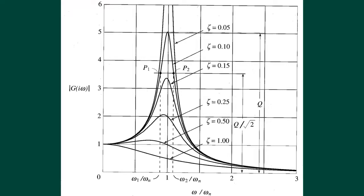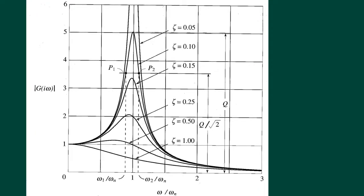Let's look at how the magnification factor — the modulus of G(iω) — varies with respect to frequency. The x-axis is omega/omega-n and the y-axis is the magnification factor. We can see different curves drawn for individual values of the viscous damping factor zeta. There are some key observations: if you look at the curves carefully, we can see peaks at certain locations, but after a while there are no peaks for higher damping values.